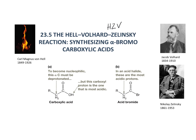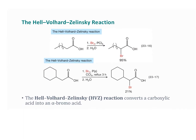Looking at the HVZ reaction, we see that Br2 and PCl3 are added as reactants. You can also use solid phosphorus and carbon tetrachloride, but you almost never see this because solid phosphorus is hard to buy, can sometimes explode in air, and PCl3 is just much easier to work with.